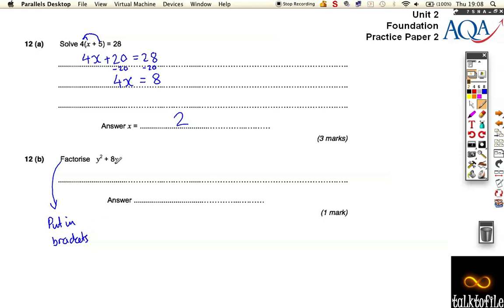So we'll put it into brackets. Well, what thing, number or letter or both, goes into both of these things? It's got to be a y. Now it's got to be a plus in it. Y times what gives me 8y? The second bit must be an 8.